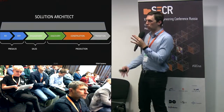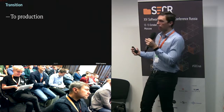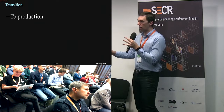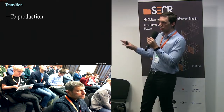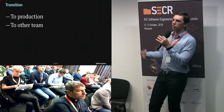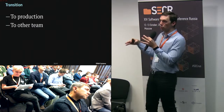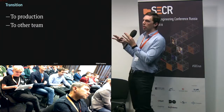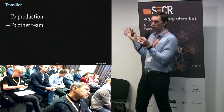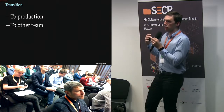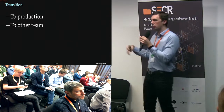The last phase where the solution architect plays a role is transition. There are two types: transition to production, which is the success case where the architect helps deploy the system to the production cloud; and transition to another team — for example, when your system is part of a larger one, when the project is transferred to another vendor, or when the team or location changes.